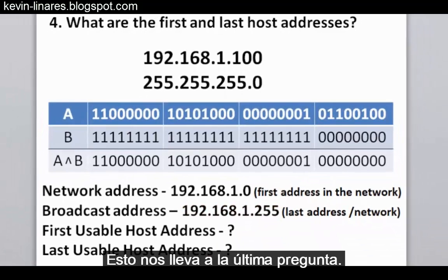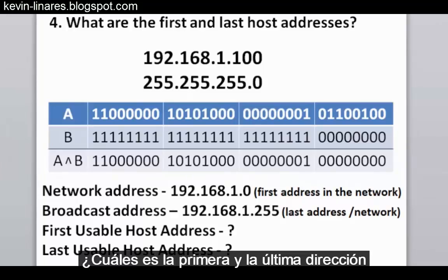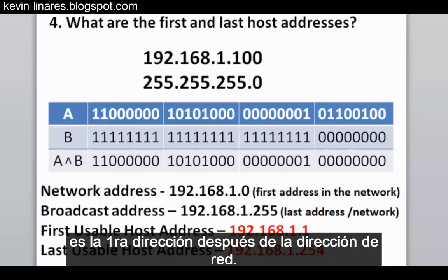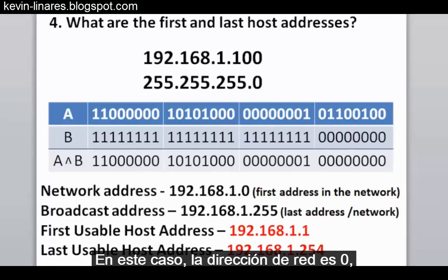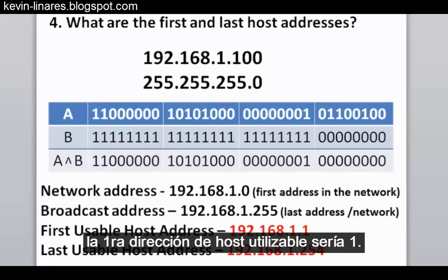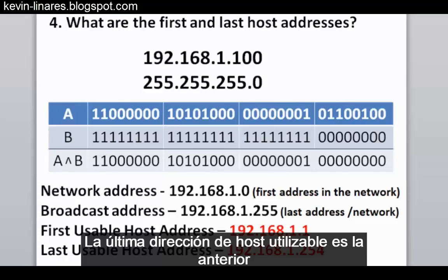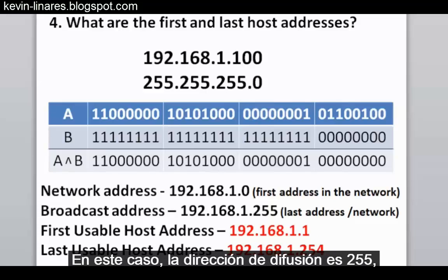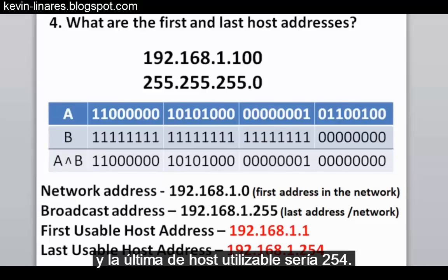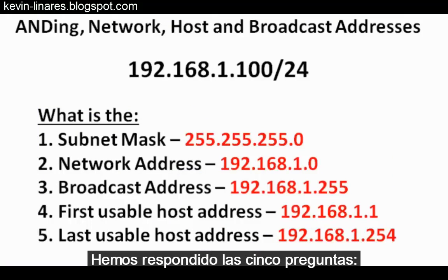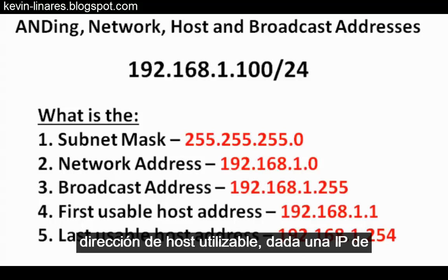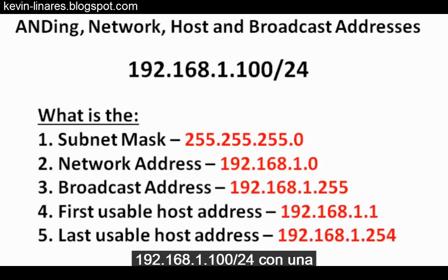This brings us to the last questions: what are the first and last usable host addresses? The first usable host address is the first address after the network address — since the network address ends in .0, the first usable host is 192.168.1.1. The last usable host address is the address just before the broadcast address — since the broadcast is .255, the last usable host is 192.168.1.254. We've now answered all five questions for the IP address 192.168.1.100/24.